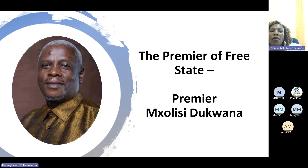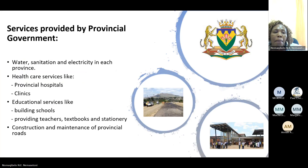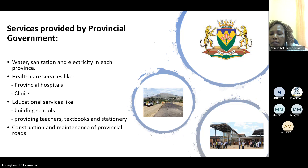In the Free State, our province is headed by the Premier. The provincial government deals with economic issues specific to the region or province. The services they provide include water, sanitation and electricity in each province; healthcare services including provincial hospitals and clinics; and educational services like building schools, providing teachers and textbooks.